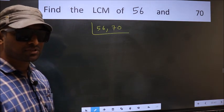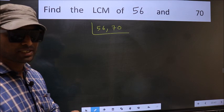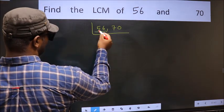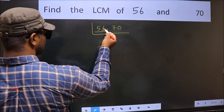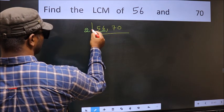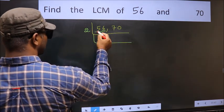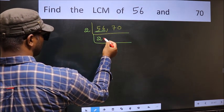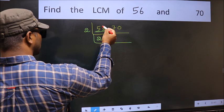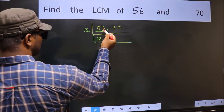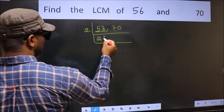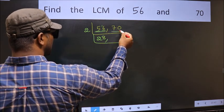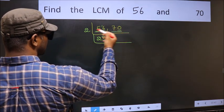Now focus on the first number, which is 56. Last digit is 6, so take 2. First number 5 — a number close to 5 in the 2 table is 4. 5 minus 4 is 1; 1 carried forward gives 16. When do we get 16 in the 2 table? 2 times 8 is 16. The other number 70 — last digit 0, so this is divisible by 2.